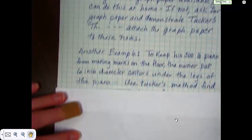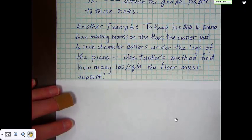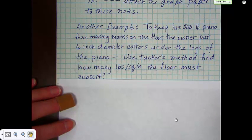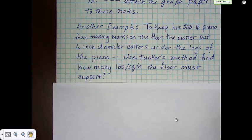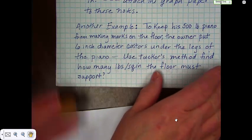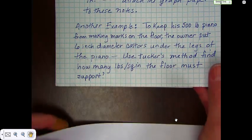Another example, and I don't think you can probably do this one. To keep a 500 pound piano from making marks on the floor, the owner put six inch diameter casters under the legs of the piano. I'm quite sure that your folks do this at home. They probably have chairs and stuff on the carpet that they don't want to have dig holes in the carpet or make marks. Use Tucker's method to find out how many pounds per square inch the floor must support, or even how many pounds per square inch these casters have to support.